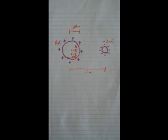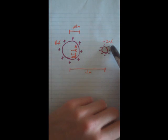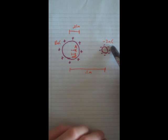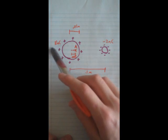So here's just a pretty simple problem. We have two spheres here. This one with negative 2 nanocoulombs of charge and this one with 10 nanocoulombs of charge.